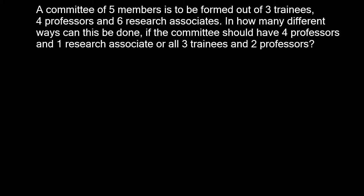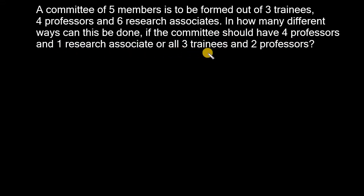A committee of five members is to be formed out of three trainees, four professors and six research associates. In how many different ways can this be done if the committee should have four professors and one research associate, or all three trainees and two professors?